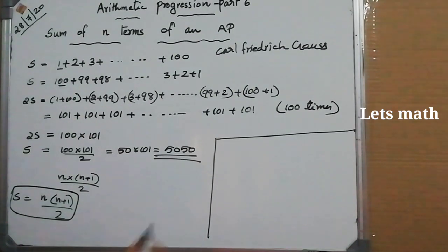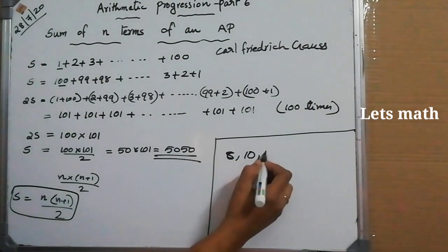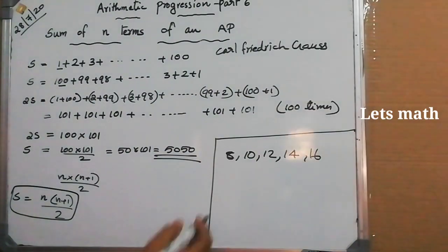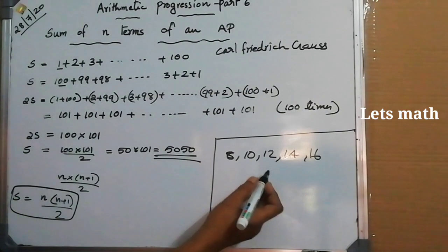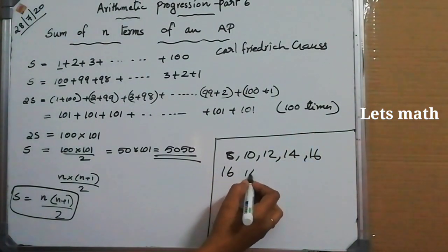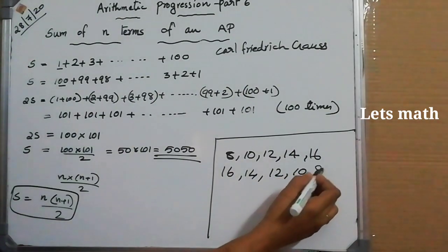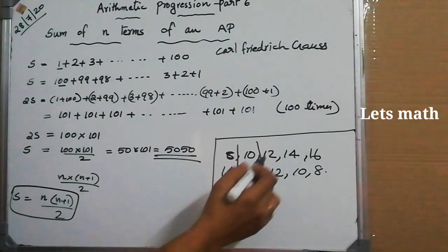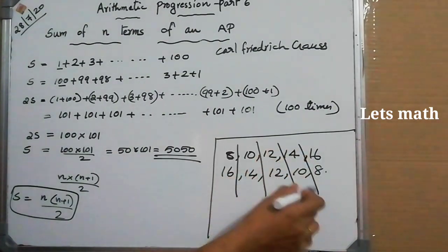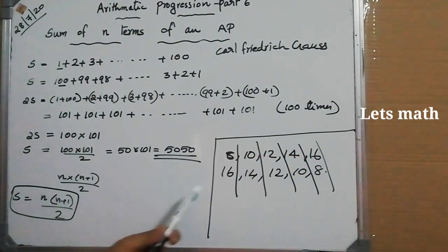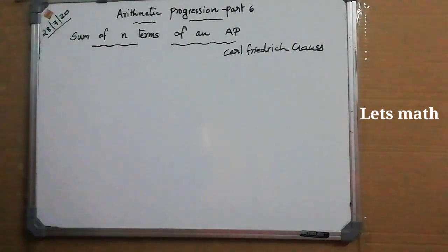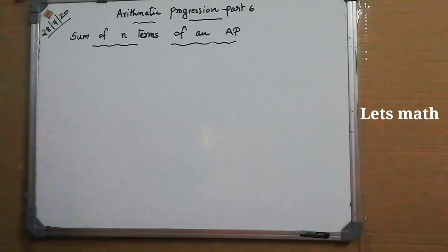Consider another AP. Writing it in reverse order and adding pairs: 8+16=24, 10+14=24, 12+12=24. You can see that pairing terms gives the same sum each time. A brief description about this mathematician (Gauss) is given on page number 9 — just go through it.